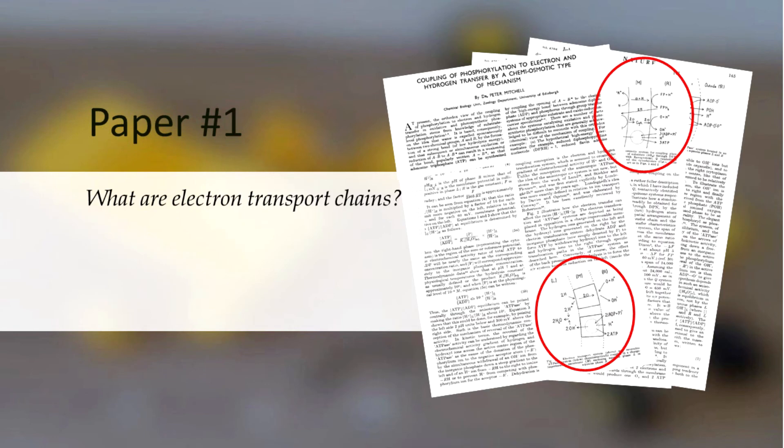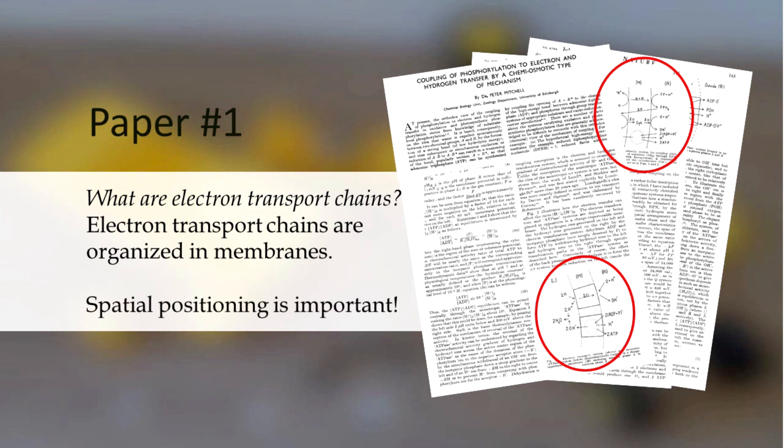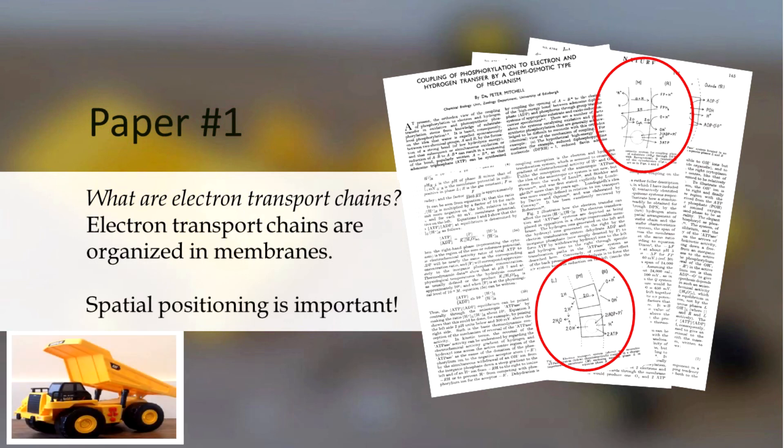This paper answers Peter Mitchell's first question: what are electron transport chains? Their component parts are organized in membranes. And because they are organized in membranes, spatial positioning is important.